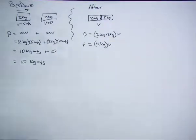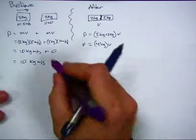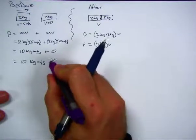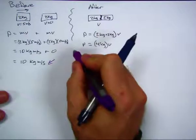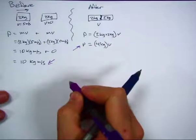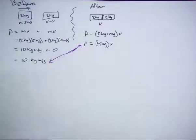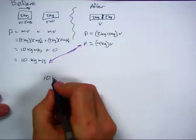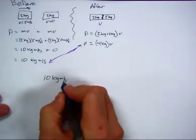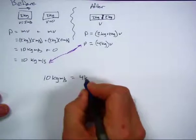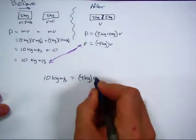Because of conservation of momentum, the momentum before the collision and the momentum after the collision are equal. Momentum is conserved. So I can write an equality: 10 kilogram-meters per second equals 4 kilograms times my unknown velocity.